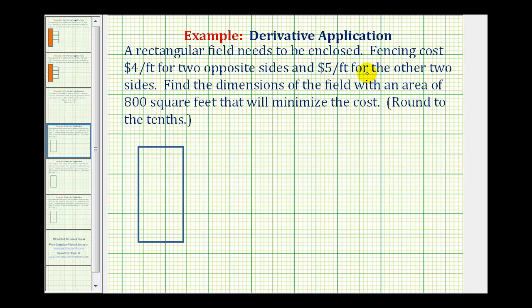A rectangular field needs to be enclosed. Fencing costs $4 per foot for two opposite sides and $5 per foot for the other two sides. We want to find the dimensions of the field with an area of 800 square feet that will minimize the cost.